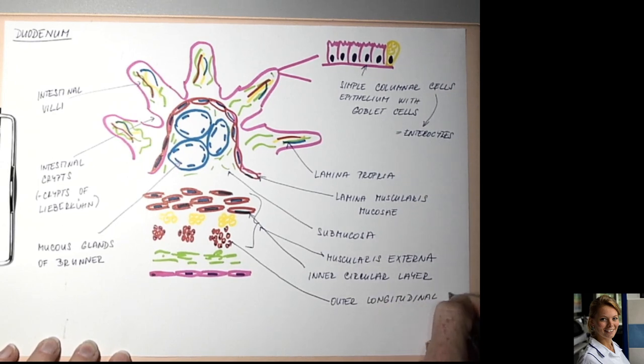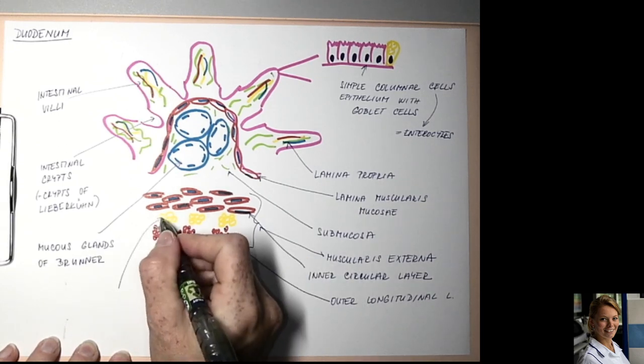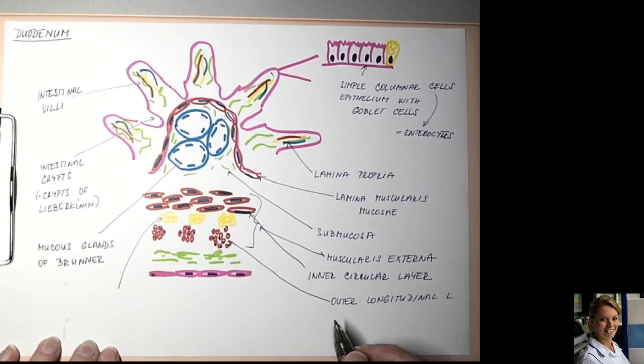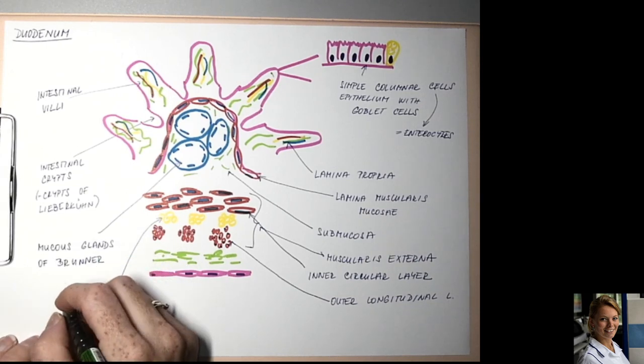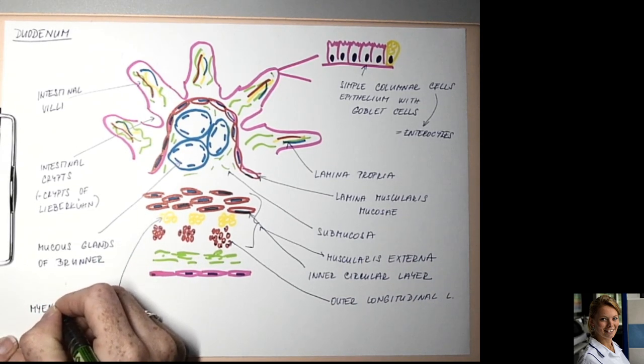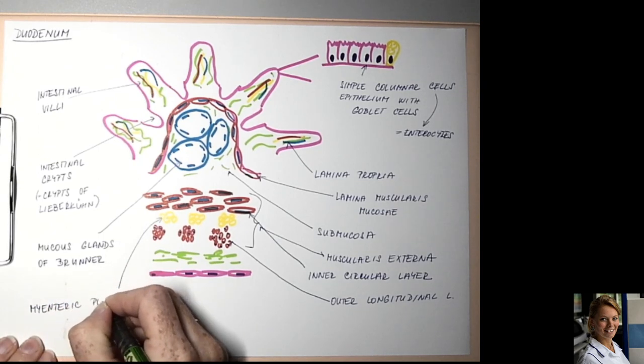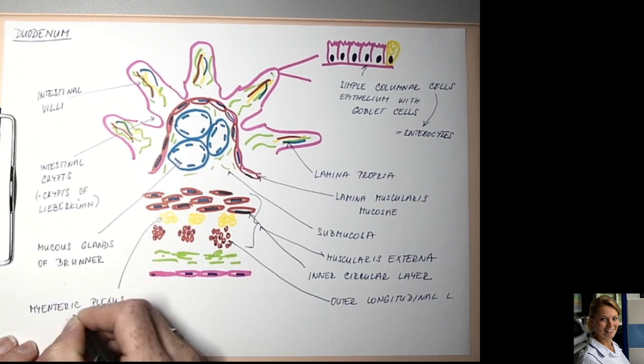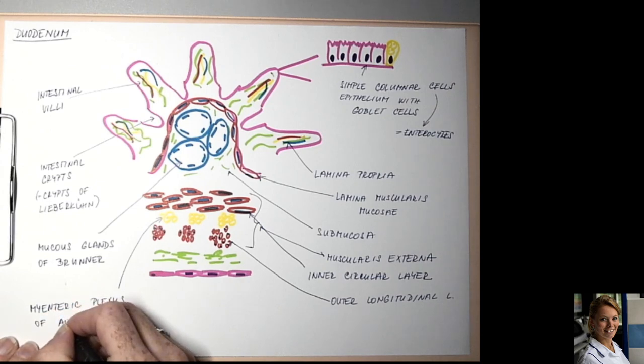Between the circular and longitudinal layers is the myenteric plexus of Auerbach.